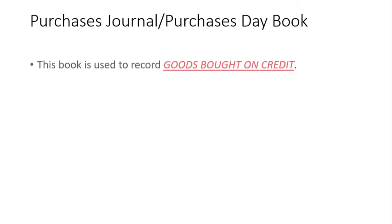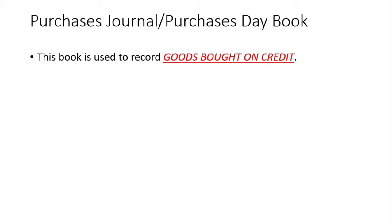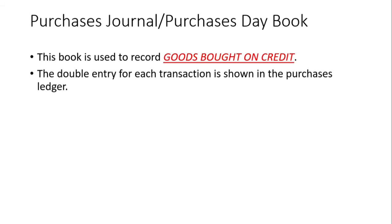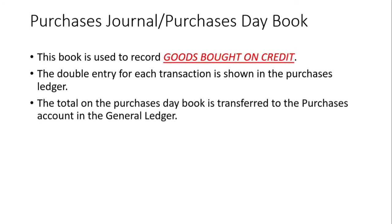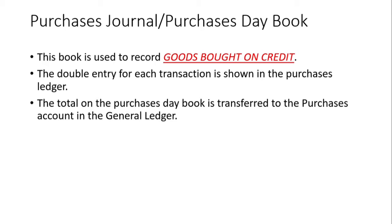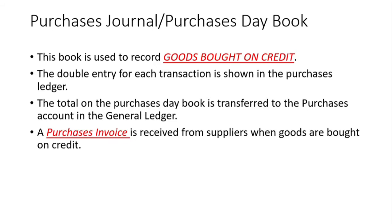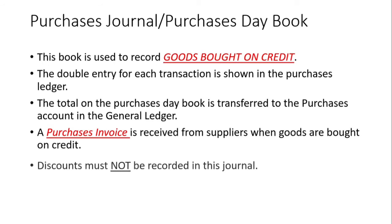So let's talk about the purchases journal or the purchases day book. First and foremost, this book is used to record goods bought on credit — only goods bought on credit are recorded in this book. The double entry for each transaction is shown in the purchases ledger, so this book is linked with the purchases ledger. The total on the purchases day book is transferred to the purchases account in the general ledger. When we buy goods on credit, we normally receive a purchases invoice from our suppliers. There are times when we receive discounts, but these discounts must not be recorded in the journal — please bear that in mind.